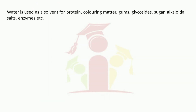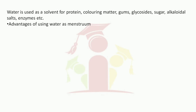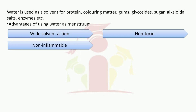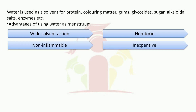Water is used as a solvent for proteins, colouring matter, gums, glycosides, sugars, alkaloid salts, and enzymes, etc. Advantages of using water as menstruum: it has a wide solvent action; it is non-toxic in nature; it is non-inflammable; and it is inexpensive.